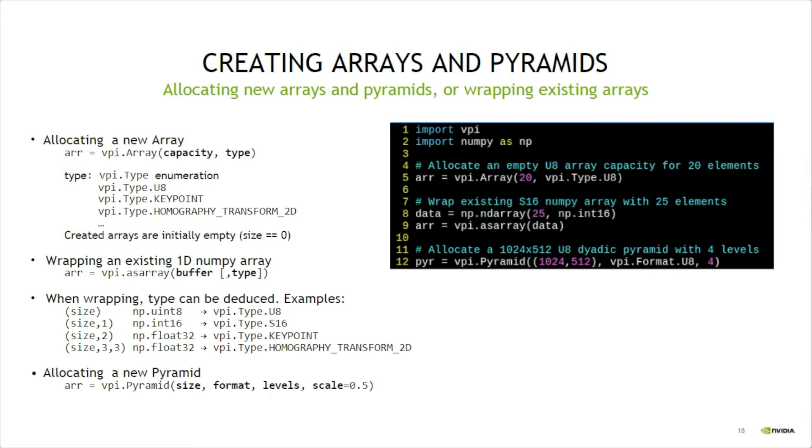Wrapping existing 1D NumPy arrays into a VPI array works similarly to wrapping an image, as can be seen on lines 8 and 9. The user passes the buffer to the asArray method and, optionally, the element type. Element type can also be deduced from the NumPy array shape, as shown in the third bullet on the slide.